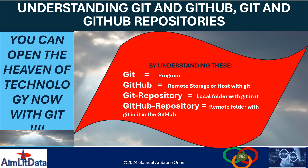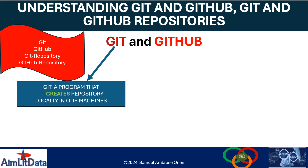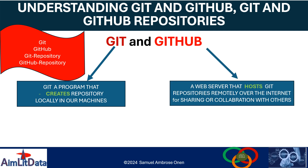You can open the heaven of technology with Git, and that is true because of the dynamism of the Git program. We have looked at basically the difference between Git and GitHub. Git is a program that creates repositories locally on your machine, and GitHub is a web server or host that houses Git repositories remotely over the internet for sharing, collaborating with others, or keeping a backup of your project.